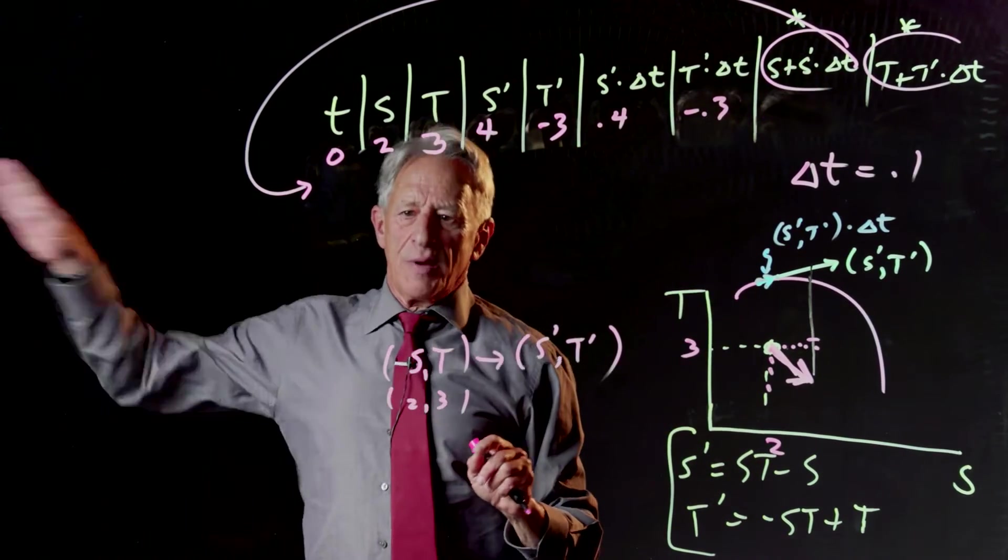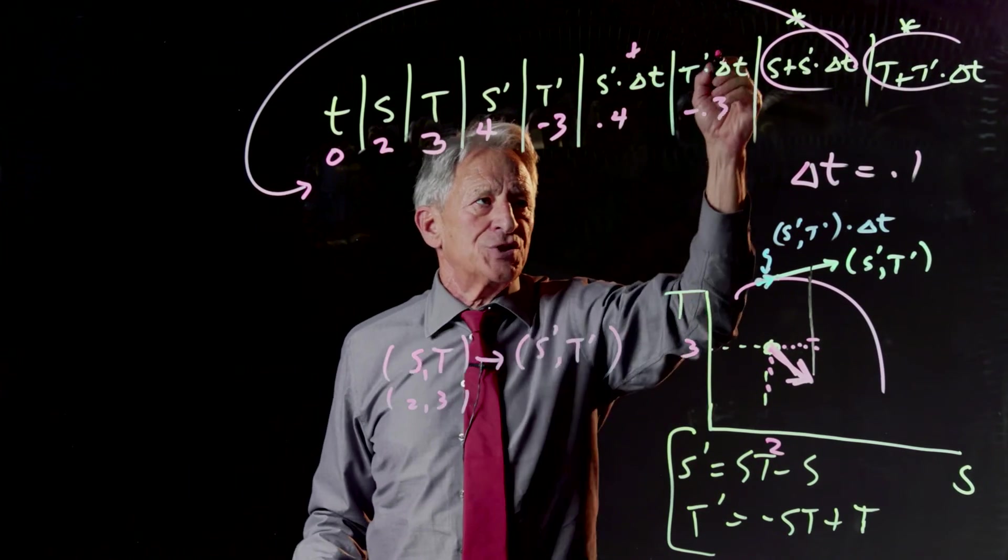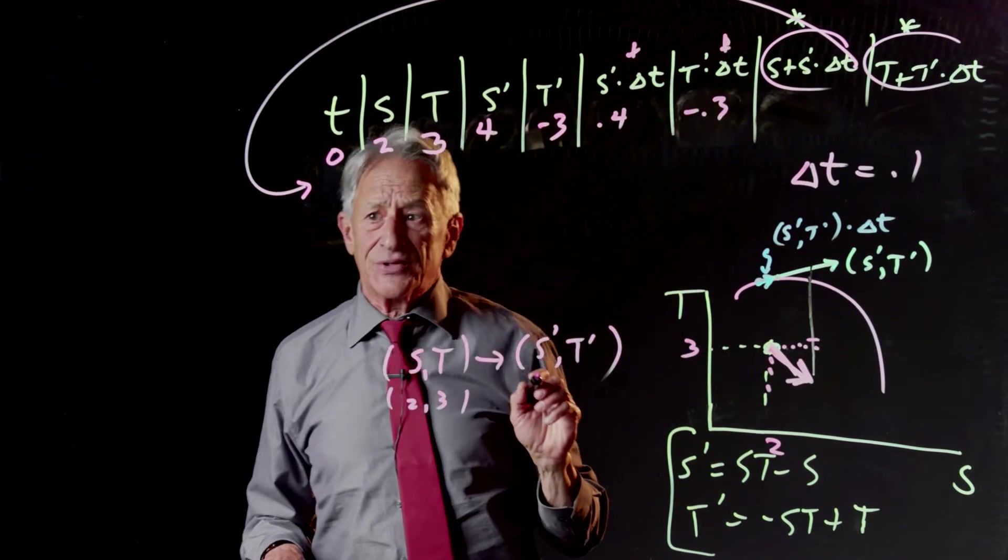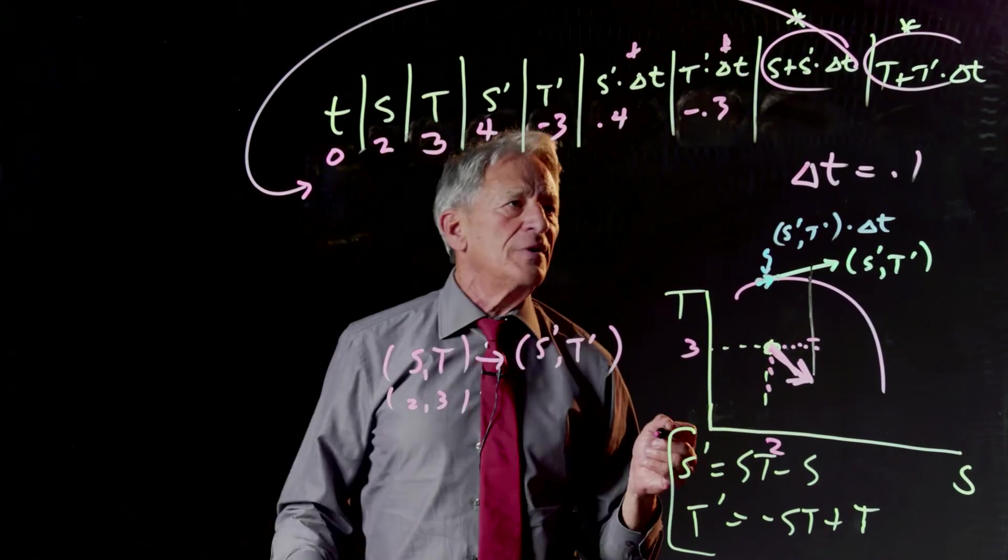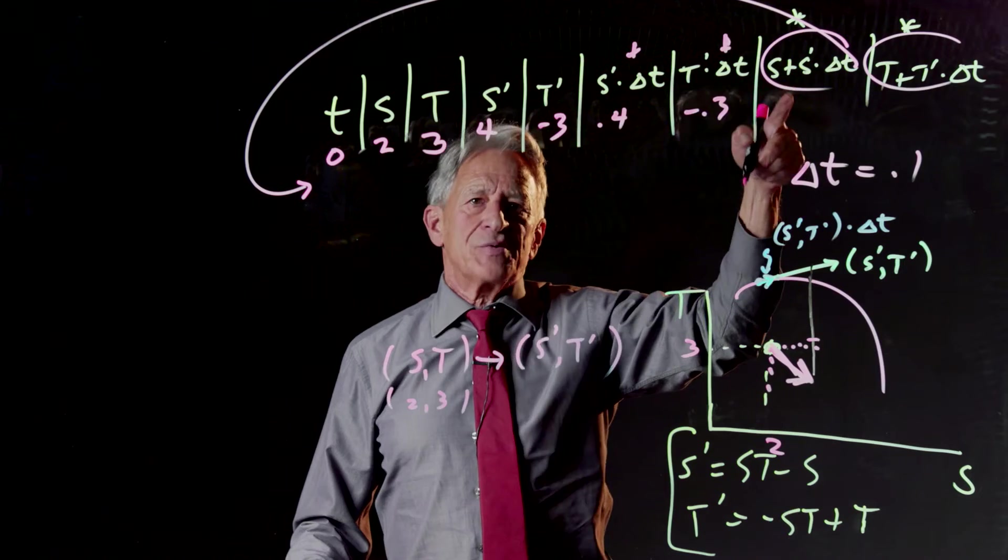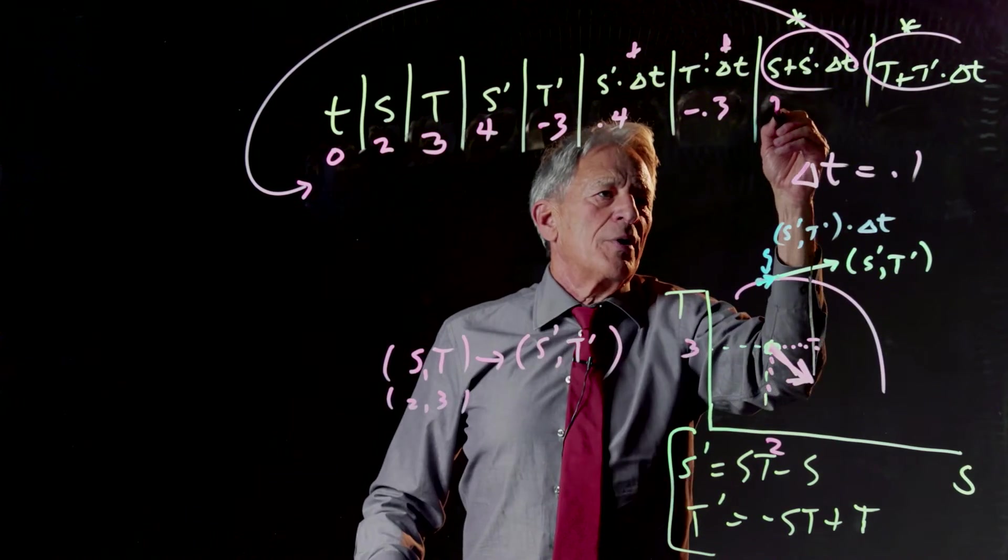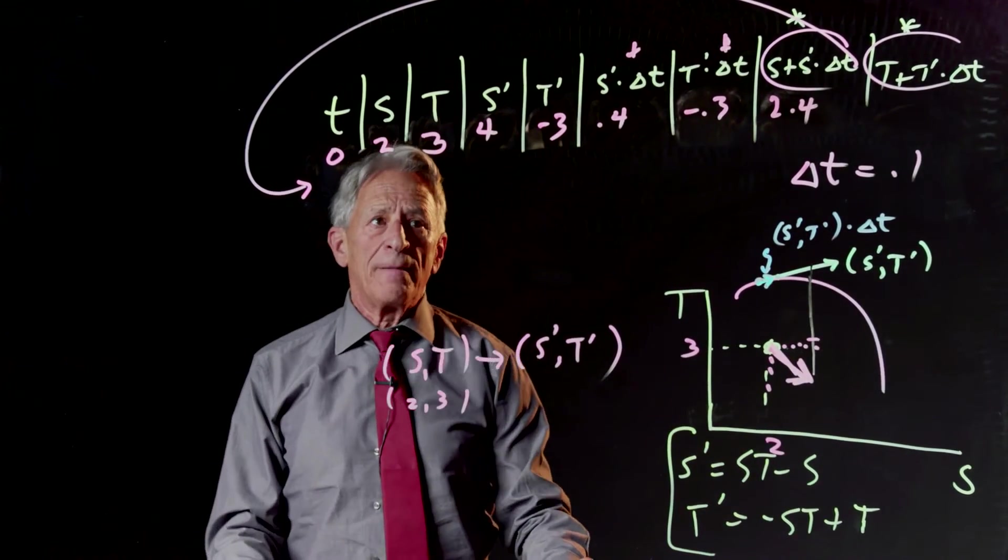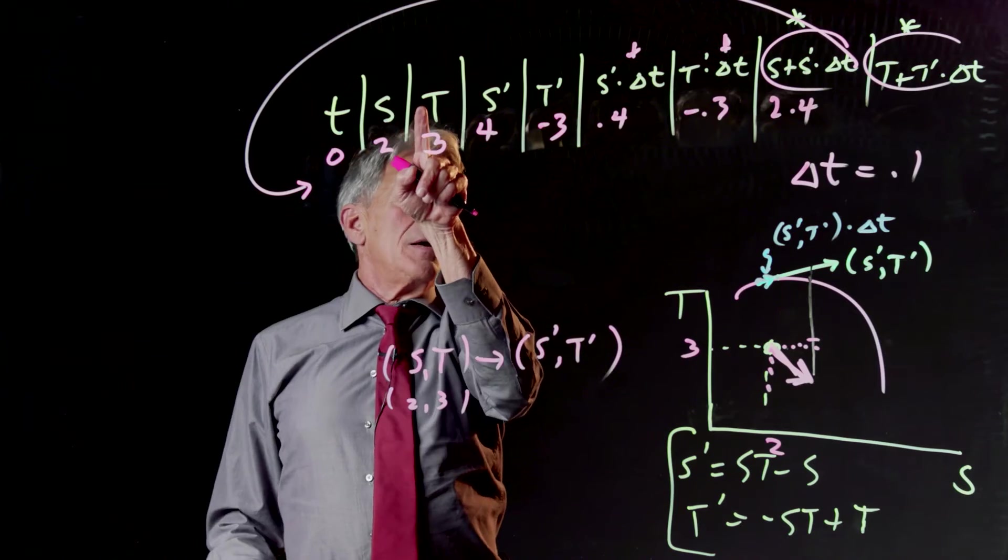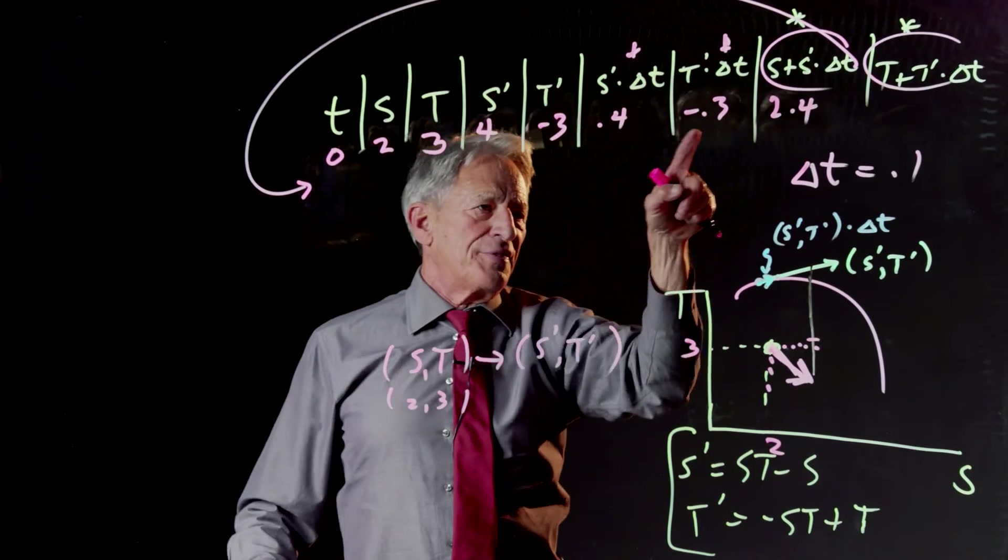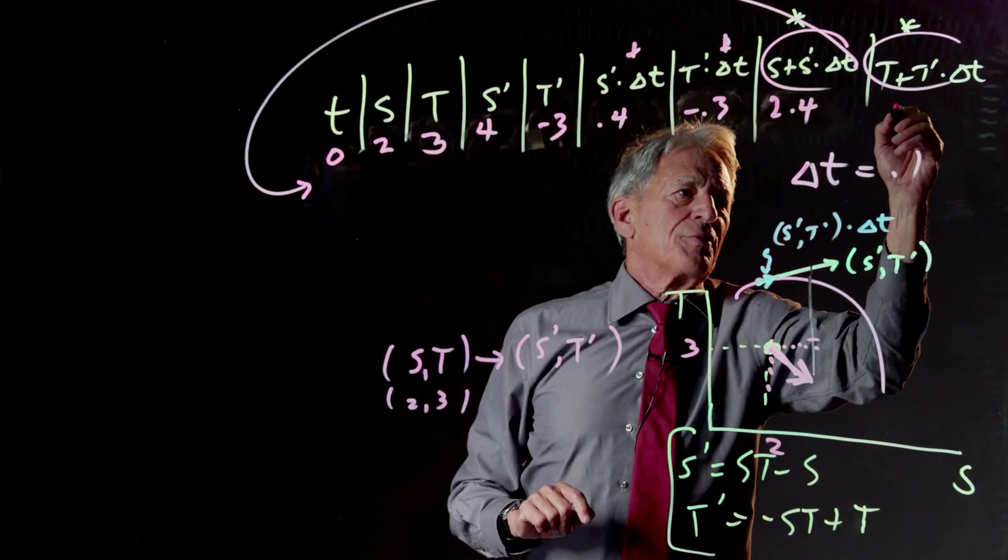Now s plus s prime and we now notice that we're using our vector addition. We just used scalar multiplication here and here to multiply the vector by delta t. Now we're going to use vector addition to add that little vector to the previous vector and s plus s prime times delta t is 2 plus 0.4. t plus t prime times delta t is t plus minus 0.3 which is 3 plus minus 0.3 which is 2.7.